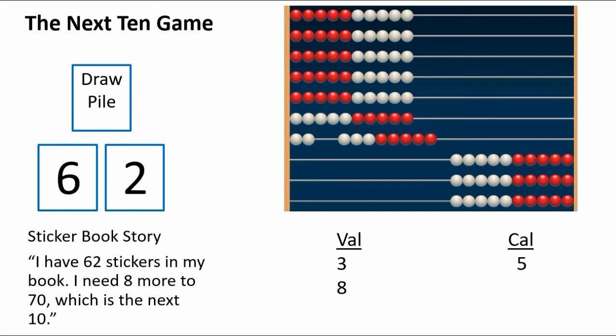And if I'm using a manipulative like the number rack, then I can set up 62 and then slide over, maybe not all the way, but partway, the eight more that it would take to get to seven 10s or 70.